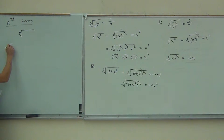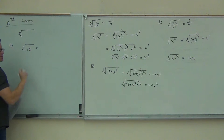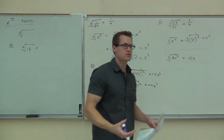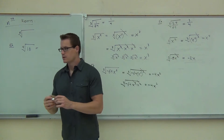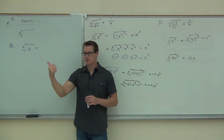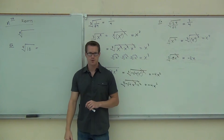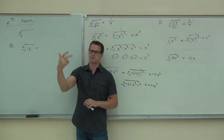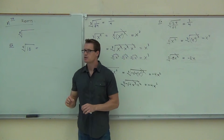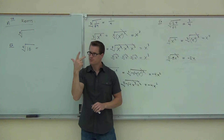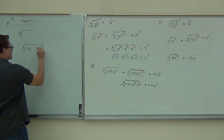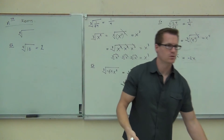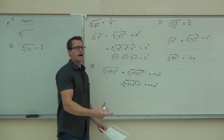Can we think about what the fourth root of 16 means? What's the fourth root of 16? We know a square root is a number times itself, a cube root is a number times itself times itself. What's the fourth root mean? Same idea — can you think of a number times itself four times that gives you 16? Two. That's all an nth root is: it's the number times itself that many times that gives you the radicand.